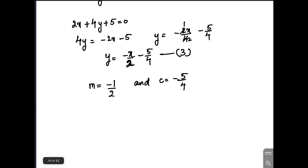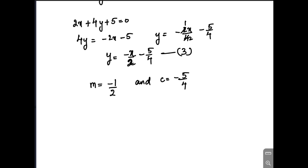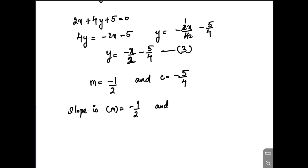From the above equation, the slope m equals minus 1 by 2, and the x-intercept c equals minus 5 by 4.